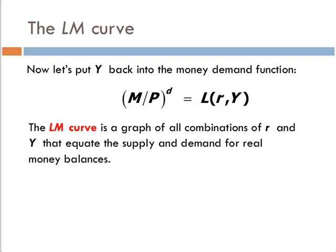The LM curve is the graph of all combinations of interest and income that result in the money market — or the market for real balances, the liquidity market — clearing. In other words, the supply and demand for real balances are equal: quantity supplied of real balances equals quantity demanded of real balances.